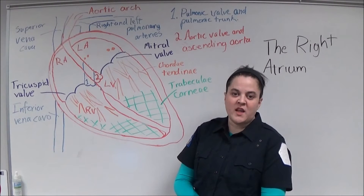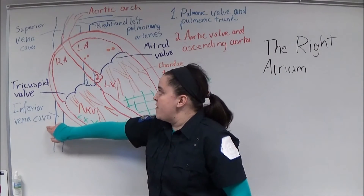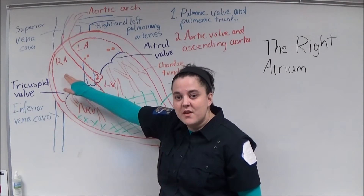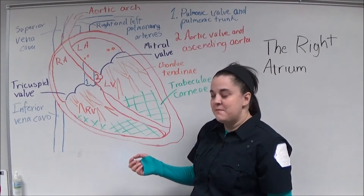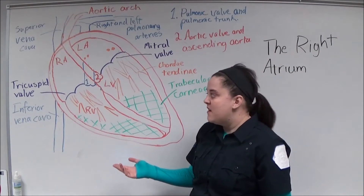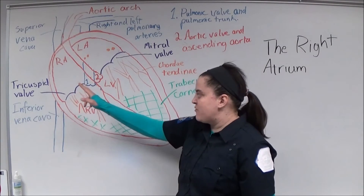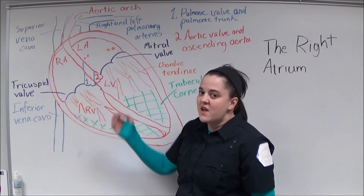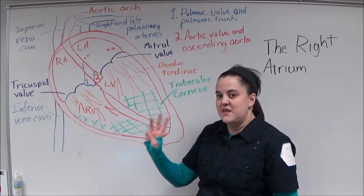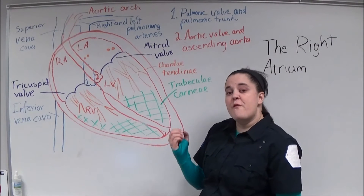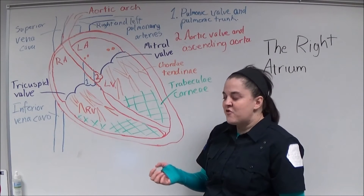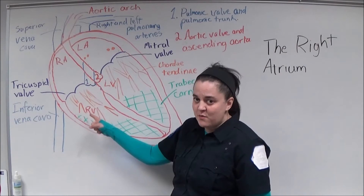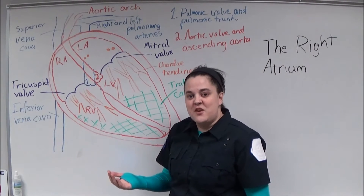Deoxygenated blood from the body returns to the heart through the inferior or superior vena cava back to the right atrium. When the right ventricle is in diastole and it's relaxed, blood is able to pass from the right atrium to the right ventricle through the tricuspid valve, which is named so because it has three leaflets. Before the tricuspid valve closes, the atrium contracts, which ejects additional blood from the right atrium into the right ventricle — also known as the atrial kick.